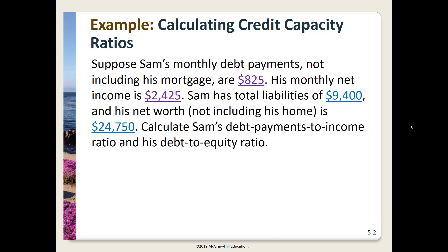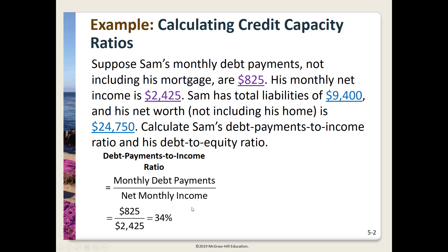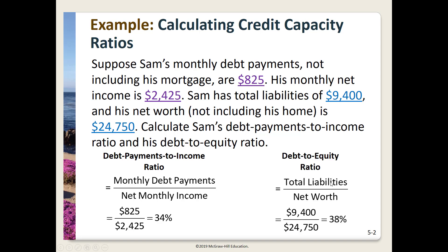Suppose Sam's monthly debt payments, not including his mortgage, are $825. His monthly net income is $2,425. He has total liabilities of $9,400 and his net worth, not including his home, is $24,750. To calculate the debt payments to income ratio, we take $825 and divide by $2,425 — that gives us 34 percent. For the debt to equity ratio, we take $9,400 divided by $24,750, which gives us 38 percent.